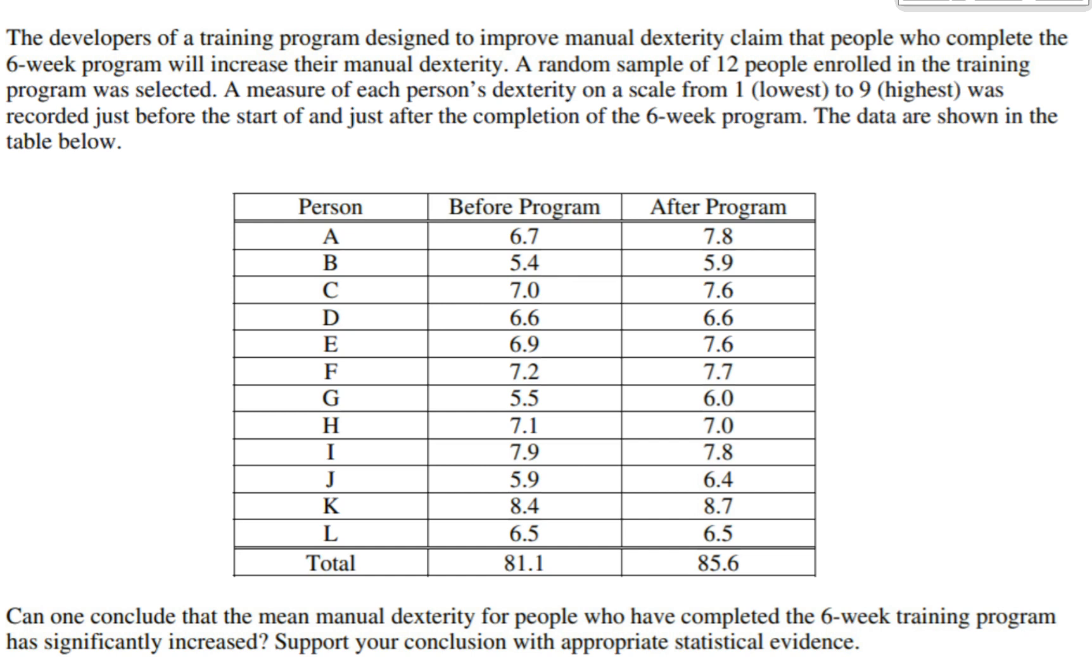The developers of a training program designed to improve manual dexterity claim that people who complete the six-week program will increase their manual dexterity. They have a way to measure that. The measure of each person's dexterity is on a scale from one (lowest) to nine (highest). With any of these problems, I always like to start by looking at the data and making sure I understand what it means and what they're telling me.